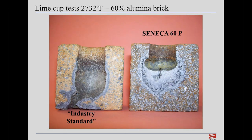We can simulate this reaction in the laboratory using cup corrosion tests. In this case, sample refractory cups were packed with lime mud and heated to 1,500 degrees centigrade (2,732 degrees Fahrenheit). At these really elevated temperatures, the lime fluxes the alumina brick, causing a fluid melt to form that upon cooling looks glassy. In this test, the melt was so aggressive it actually eroded the industry standard sample and flowed into the bottom of the laboratory test kiln. The melt, however, appeared to be retained in the Seneca 60P cup, suggesting that Seneca 60P had better resistance to the melt.